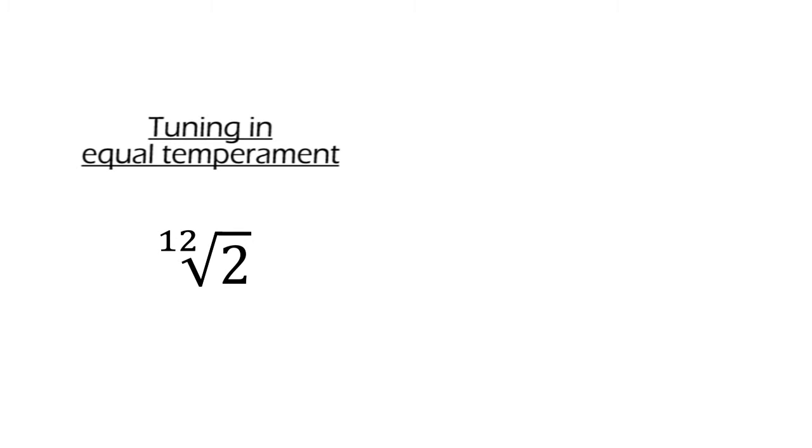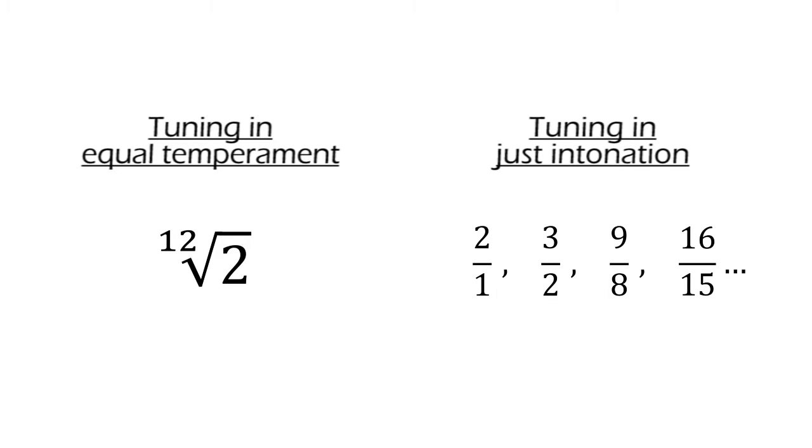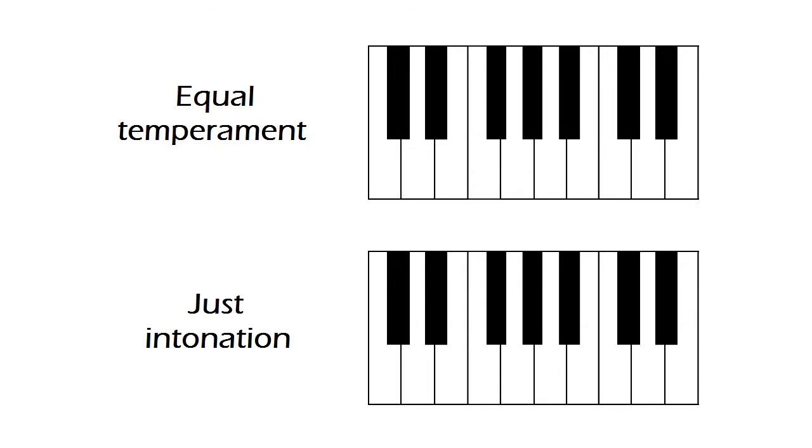Besides tuning in equal temperament, which we explained in the previous episode, there is another tuning system called just intonation, where the frequencies of the notes are not obtained by powers of the 12th root of 2, but rather, their ratio to the frequencies of other notes are fractions of whole numbers. This means that the pitch of some of the musical notes will sound slightly different than we're used to.